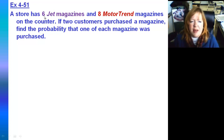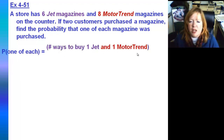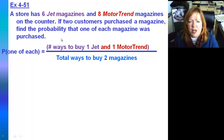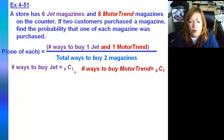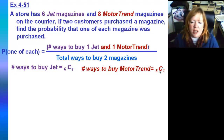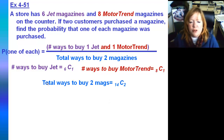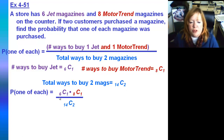Let's say we've got a store selling six Jet magazines and eight Motor Trend magazines. Two customers purchase a magazine — find the probability that one of each was purchased. We need the number of ways to buy one Jet and one Motor Trend out of the total ways to buy two magazines. We have six choose one for Jet and eight choose one for Motor Trend. Total magazines is 14, so the denominator is 14 choose two. That gives six times eight over 91, or 48 out of 91 — almost slightly more than 50 percent.